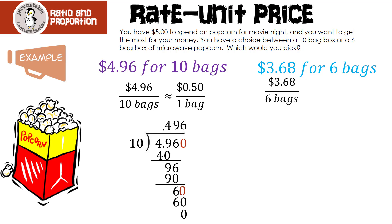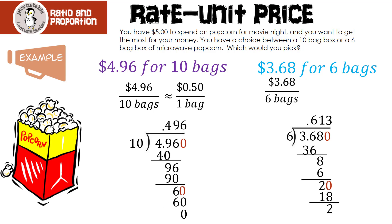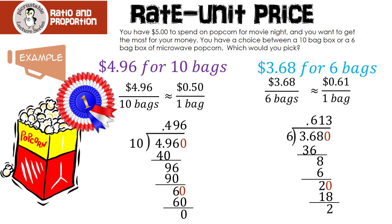How much is the other one? We divide 6 into $3.68. Bring up the decimal. 6 times 6 is 36; bring down the 8; it goes in once with remainder 2; bring down a 0; 3 times 6 is 18. So 0.613 rounds to 61 cents per bag. Would you rather pay 50 cents for one bag or 61 cents? The winner is $4.96 for 10 bags — that's the best buy.